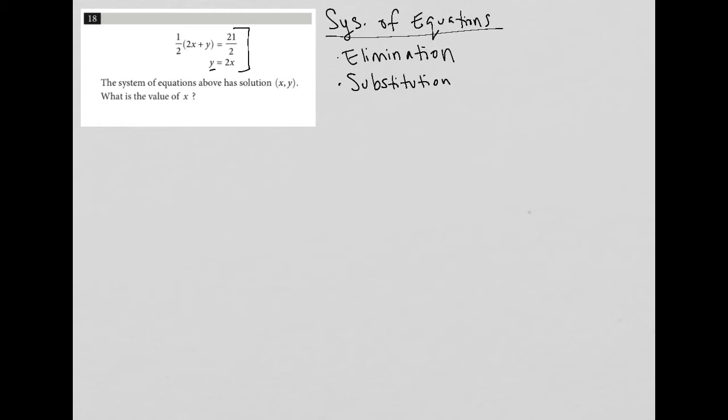That's what we have here, so we have y that's isolated in the second equation so I'm going to use a substitution method. What that tells me to do is if I know that y is equal to 2x I can just go up here and replace this y with 2x.